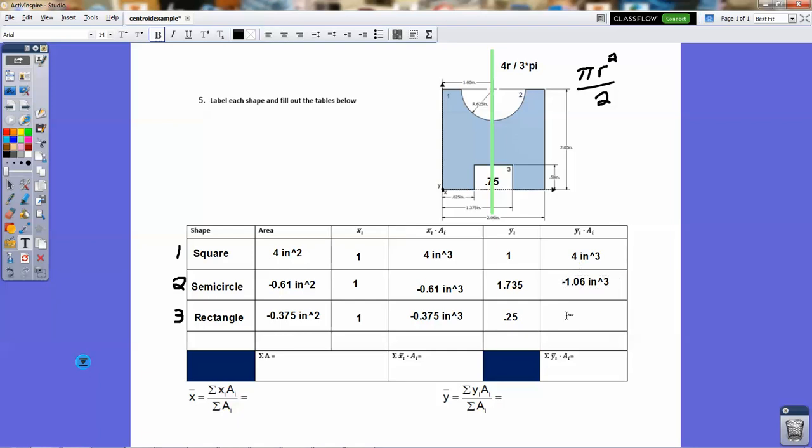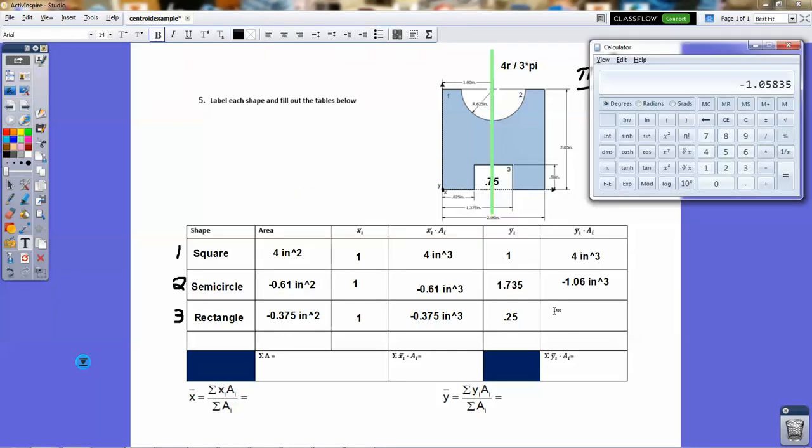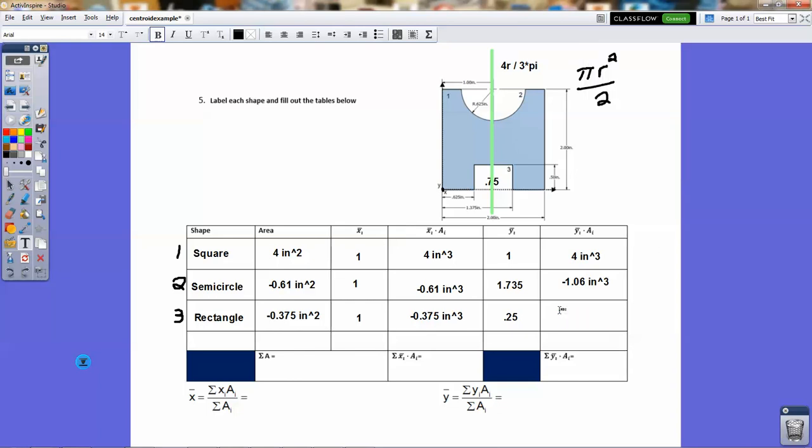And then here we have 0.25, and we're multiplying that by the area of negative 0.375. Let's make that negative. And then we're going to get negative 0.094. Negative 0.094. Okay. Probably could just say 0.09, but it's okay. All right. So we have that. We have 4, we have that, and we have that.